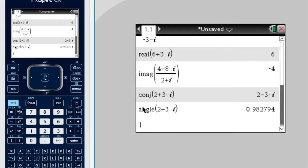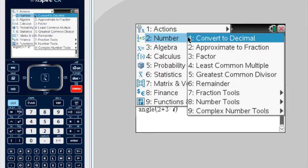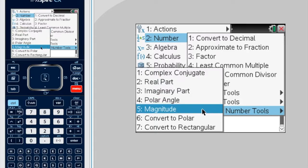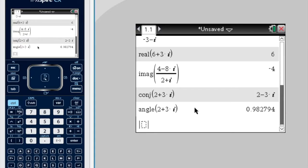Let's actually find the modulus of that. So menu, number, and when I say modulus, I mean length. Or magnitude. So magnitude. And let's put 2 plus 3i again.